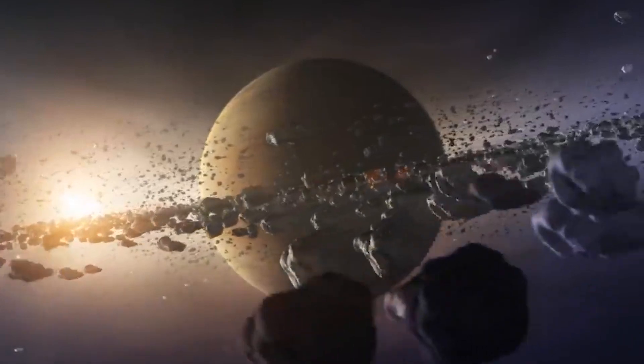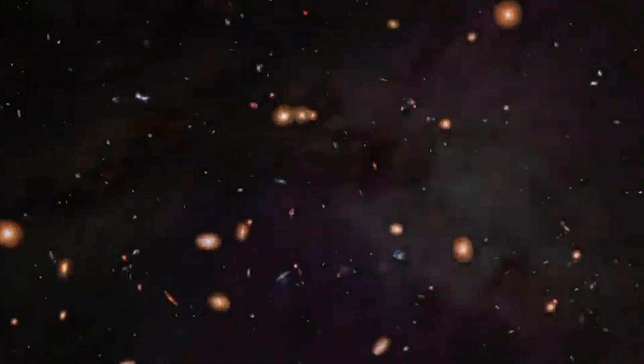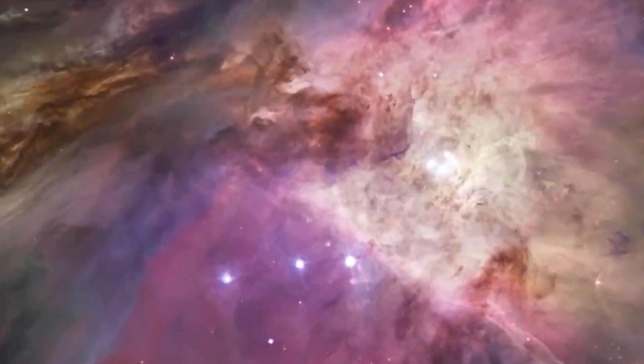In our solar system, lava worlds like K2-141b have never been discovered. Even Mercury isn't in the right position to have magma oceans on its surface since it's too far from the Sun.